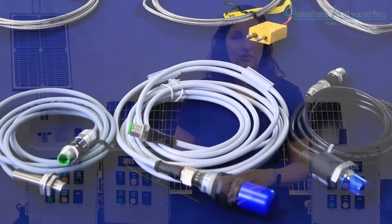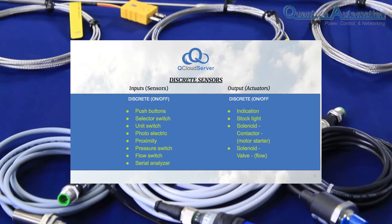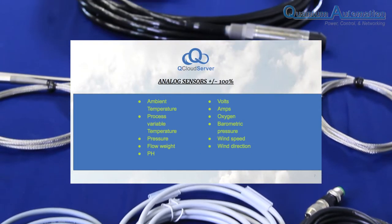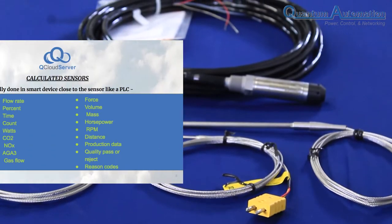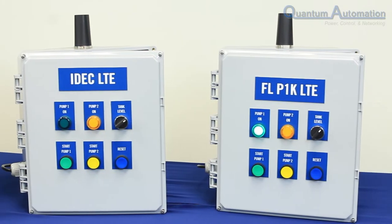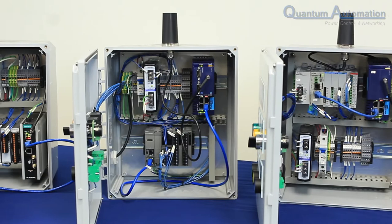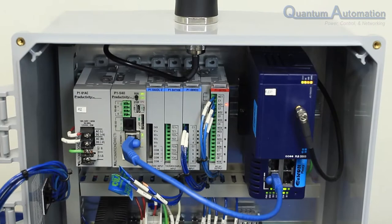So let's take the journey into the cloud and start with sensors. We have discrete on-off type sensors. We have analog sensors that are plus or minus 100%. We have calculated sensors. A PLC can manipulate and store short-term data for both real-time and long-term historical data logging.